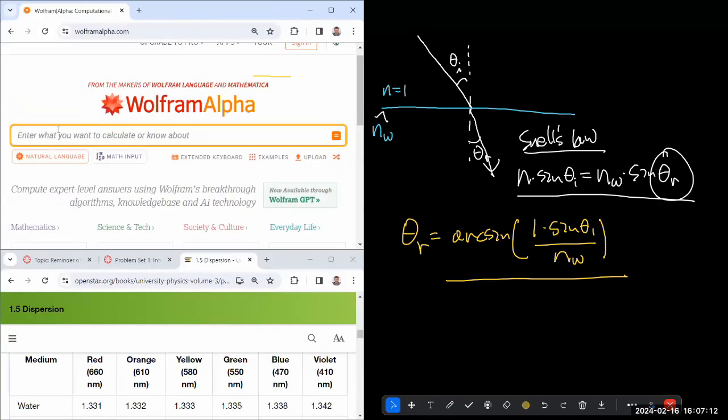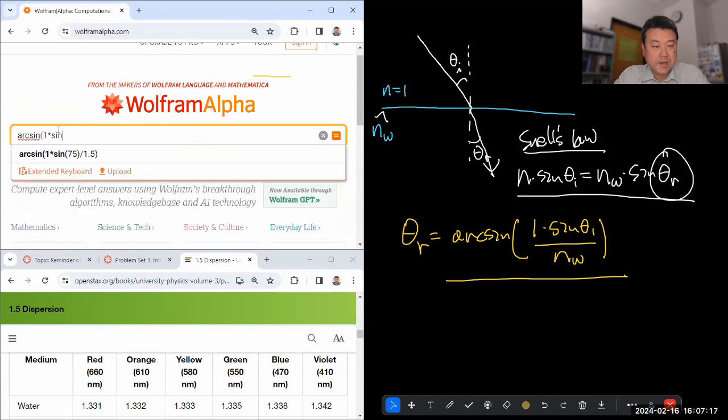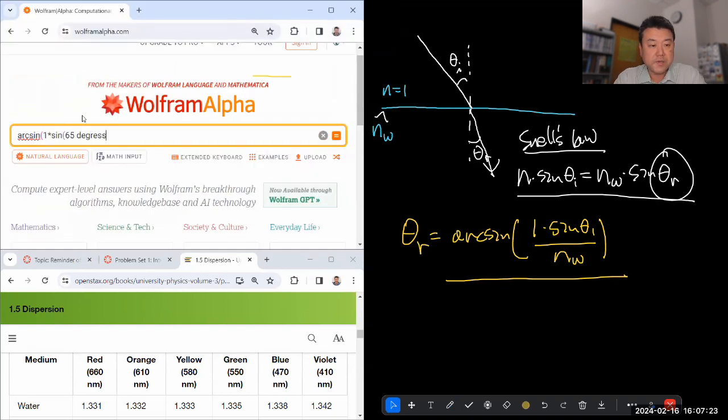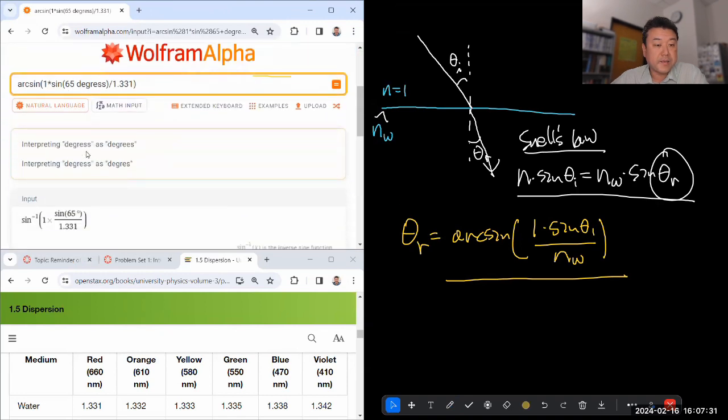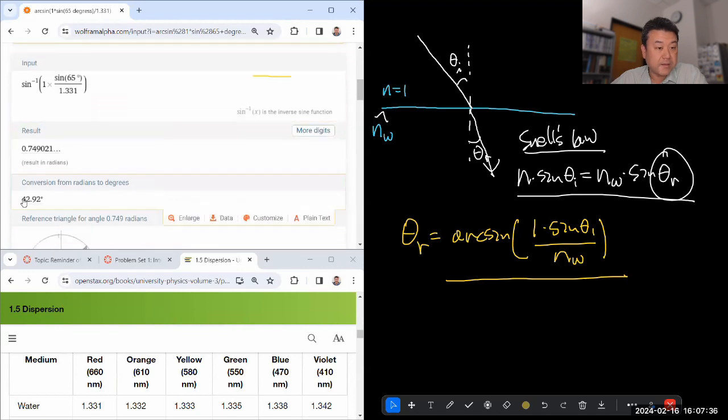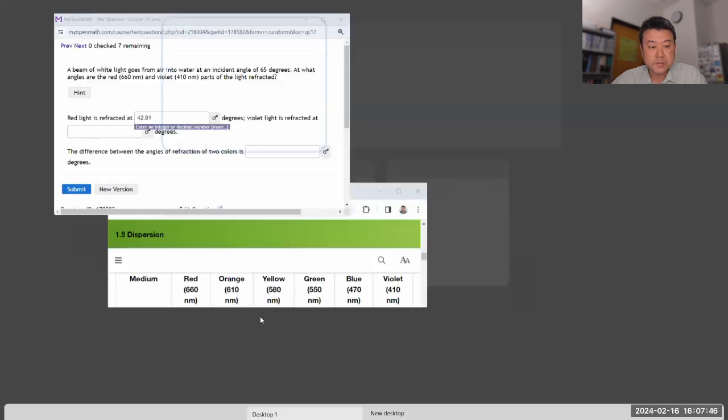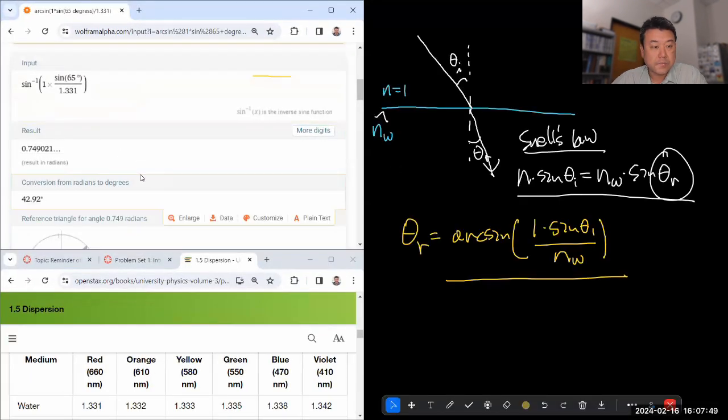I'm just going to move this up here. So I have arc sine of one times sine of the angle that we were given was 65 degrees. So this is divided by index of refraction. Let's do red first. So 1.331. So that gets me as that in radians or 42.92. Because the dispersion tends to be small, let me just put in all the available significant figures. So that's that.